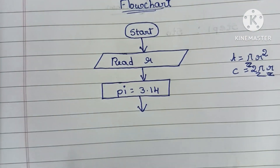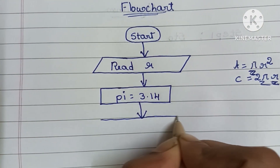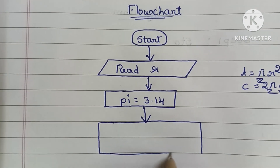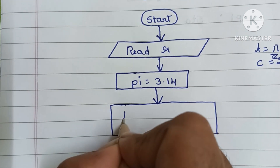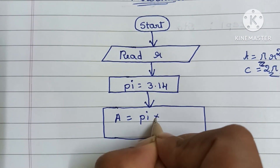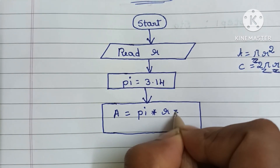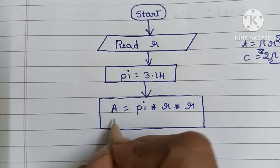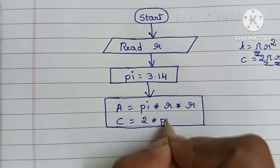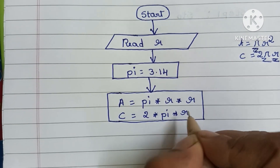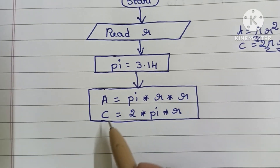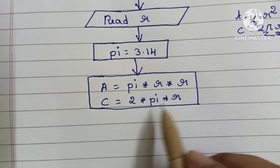Next, we perform the calculations, also within a rectangular shape. The area of the circle is A = pi × r × r (pi r squared), and the circumference of the circle is C = 2 × pi × r.